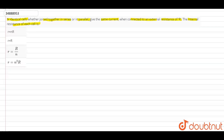In series, I₀ equals N times E divided by R plus N·r.